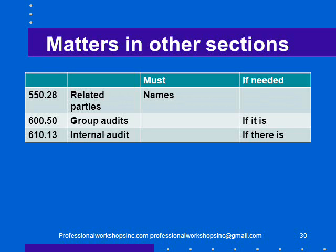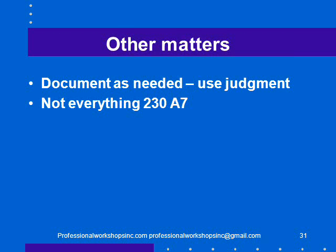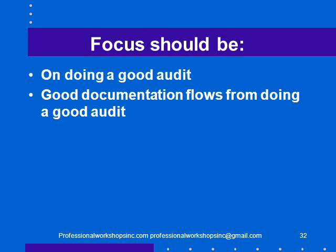Related parties, names, group audits — if applicable, there are things to document. Internal audit — if there is one and you use it, there are things to document. For other matters, you would document as needed using judgment, remembering that 230 A7 tells us we don't have to document everything. Our focus should be on doing a good audit, and we should hope that good documentation flows from doing a good audit.